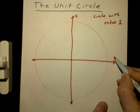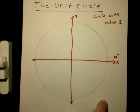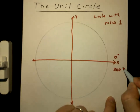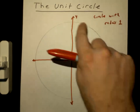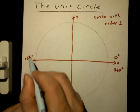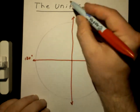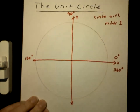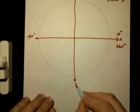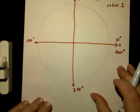Now we're going to play a kind of game. This starting point is zero degrees. If you go all the way around the circle, you go 360 degrees. If you go half the distance, that's 180 degrees. A quarter of that is 90 degrees. Three quarters is 270 degrees, and then back to 360.